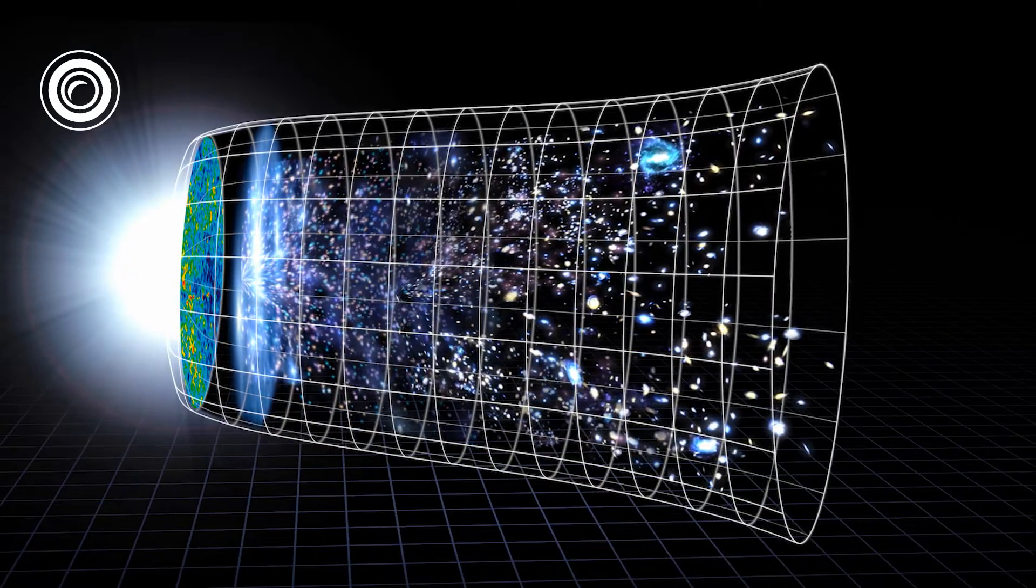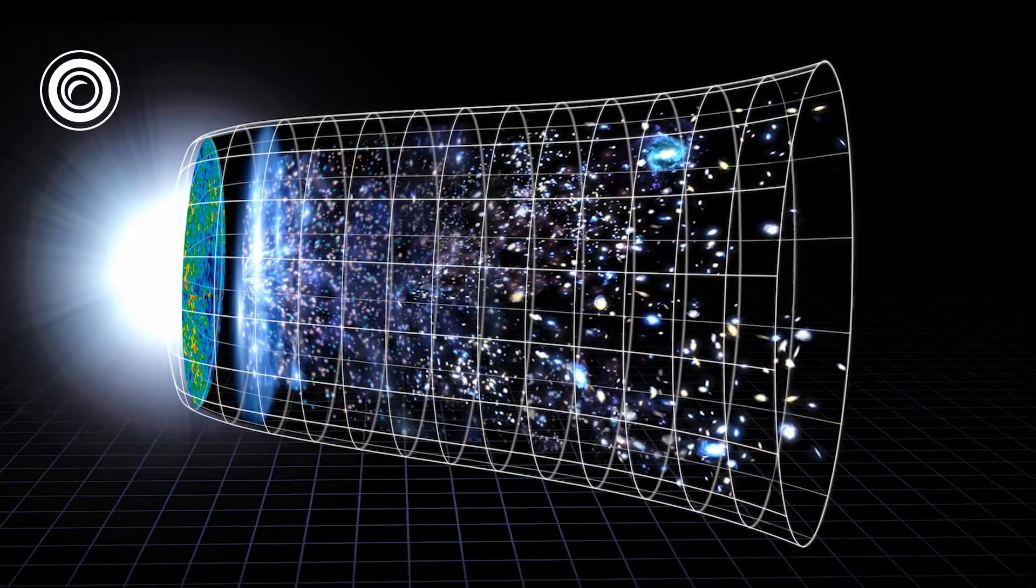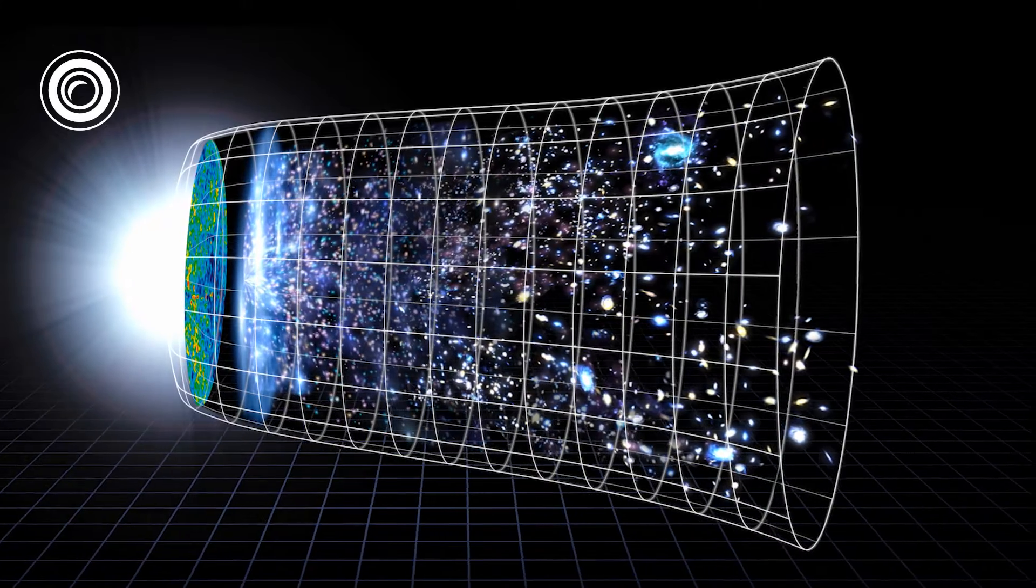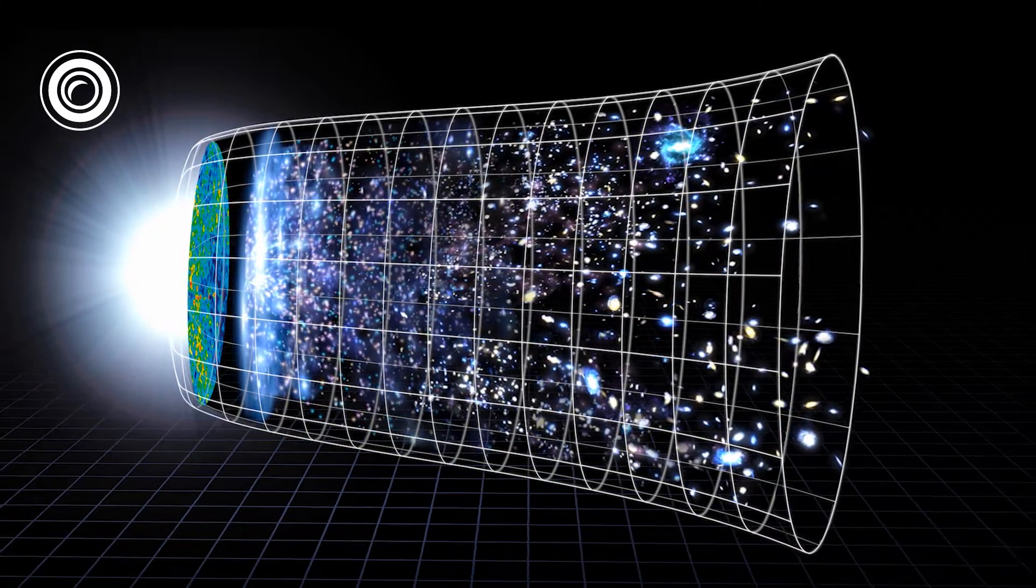In order to get some more insights into dark energy and dark matter, astrophysicists realized that they would need to map out the large-scale structure of the universe and its changes over time. Where were they going to start?